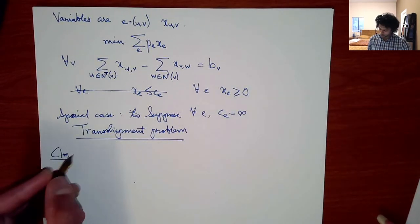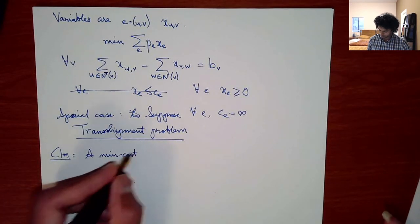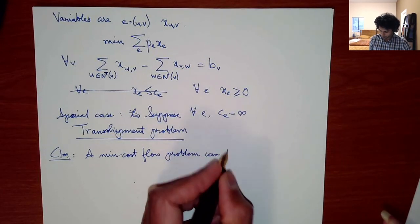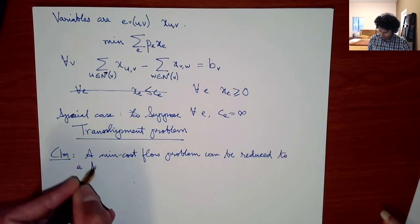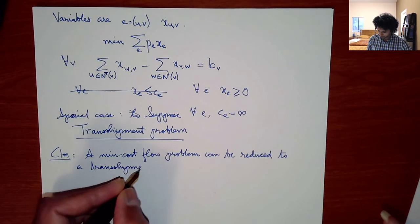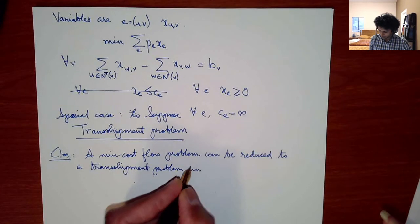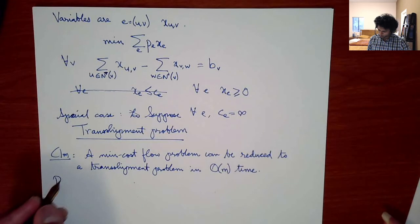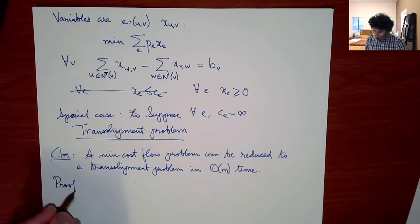A min cost flow problem can be reduced to a transshipment problem in linear time, so we can ignore capacities altogether and focus only on prices.